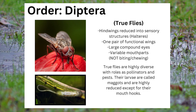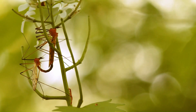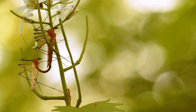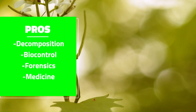The order Diptera contains the organisms known as true flies. True flies can be identified by their halteres, which are sensory structures formed from what used to be their hind wings, their single pair of functional wings, their large well-developed compound eyes, and their variable mouthparts. The mouthparts a fly has is indicative of what they feed on, with certain species exhibiting piercing, sucking, sponging, or absent mouthparts. True flies are highly diverse, with roles as pollinators and pests. Their larvae are called maggots and are highly reduced, except for their mouthhooks. Flies play a role in decomposition, pollination, biocontrol, forensics, and medicine.